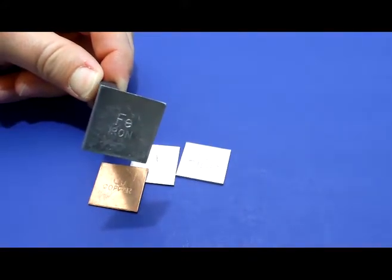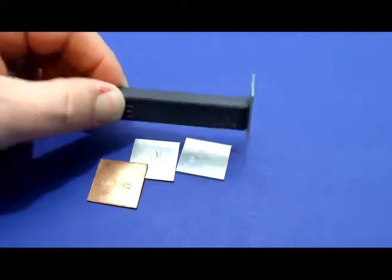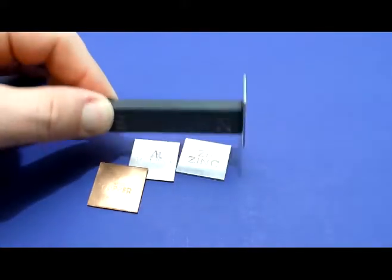In fact, anything that contains cobalt, nickel, or iron will be attracted to a magnet. These other pieces are not.